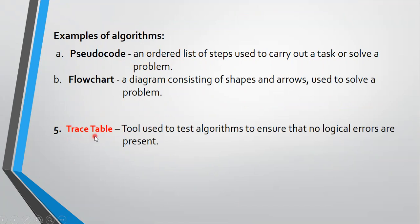Finally, you work with a trace table — a tool used to test your algorithm. You've got to test your algorithm to ensure there are no logical errors. Logical errors means errors in the meaning or understanding of the algorithm. For example, if your algorithm was to add two numbers, it should not be multiplying two numbers — that would be a logical error.